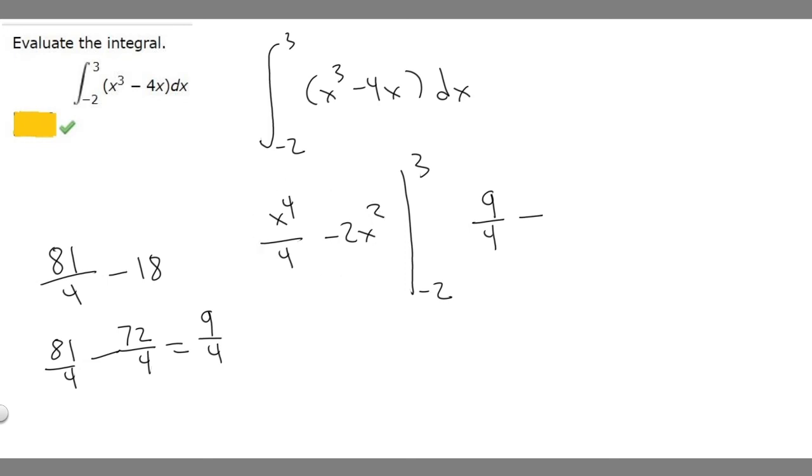Minus 2 to the 4th power is 16. 16 over 4 is 4. Then minus 2 times minus 2 squared - minus 2 squared is 4, and minus 2 times 4 is minus 8. So it's 4 minus 8, which gives us minus 4.